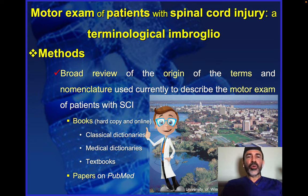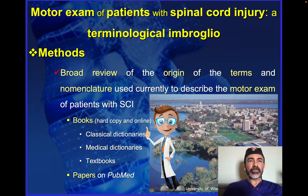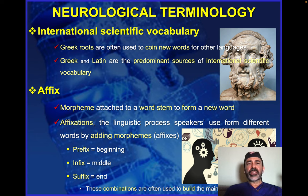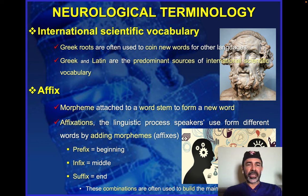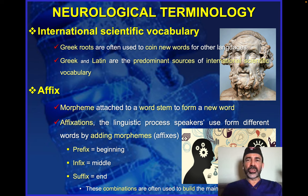We made a broad review of the literature, going through all ancient books of Greek and Latin origin, and the papers. With this, we found that neurological terminology essentially comes from Greek origin, using a prefix at the beginning and a suffix at the end of words. Based on those terms, we can build most of the medical terms.